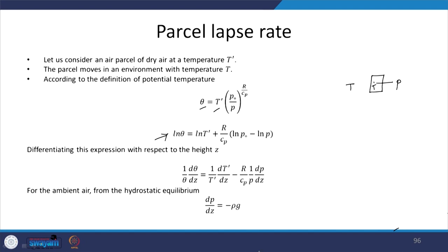We can take a logarithm of theta and then differentiate this expression with respect to z, with respect to height. We are trying to find out how the temperature of the air parcel changes as it rises or sinks, with reference to the standard pressure P naught, and see how the temperature varies with respect to height and how it relates to the dry adiabatic lapse rate or moist adiabatic lapse rate. Taking the logarithmic derivative gives: 1 over theta times d theta by dz equals 1 over T prime times dT prime by dz.